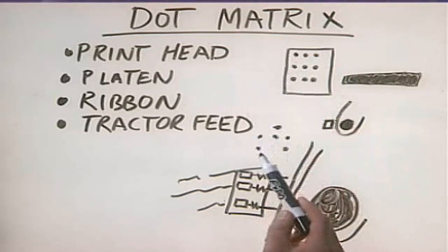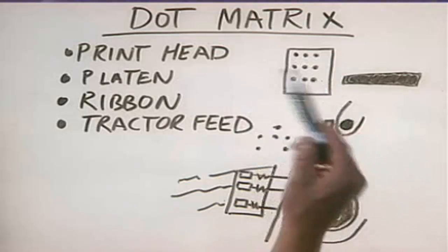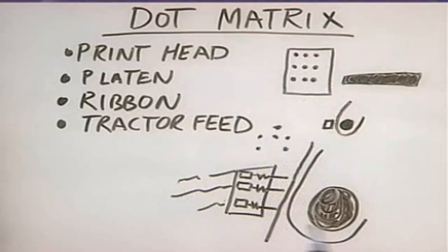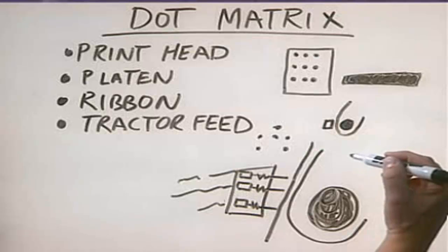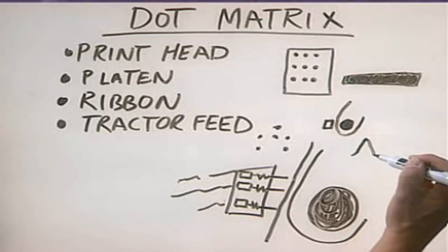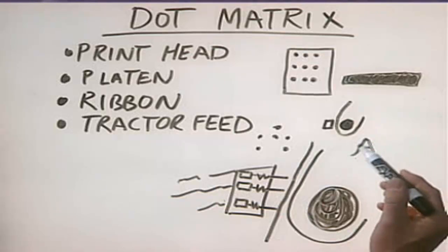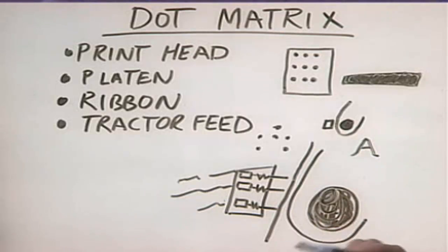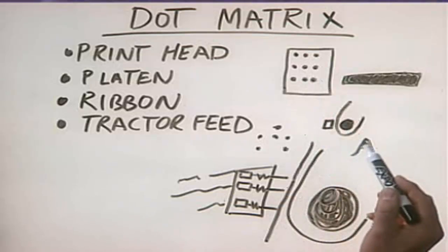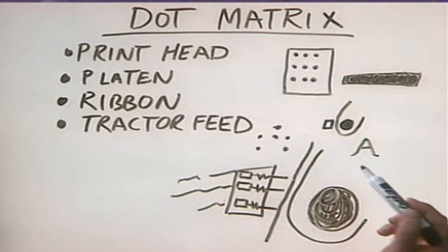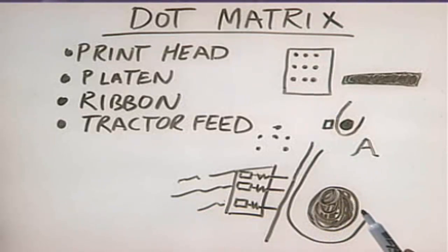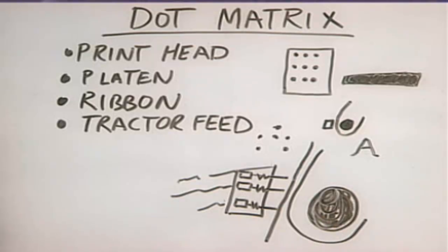A lot of nine-pin dot matrix printers compensate by providing an option where it makes two passes for each line of text. By doing that, it can actually create somewhat better, more regular looking letters — going through and creating each letter in the line twice using two different pin patterns, overlaying one over the other to get a character that looks relatively good. Obviously, if you're printing each line twice, it takes twice as long to print.